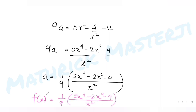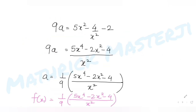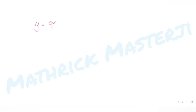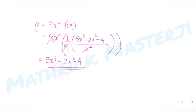Now that we have f(x), we can find y. The question tells us y = 9x²·f(x). Substituting our expression, y = 9x² · (1/9) · (5x⁴ − 2x² − 4)/x. The 9 and the x² cancel with the denominator, leaving y = 5x⁴ − 2x² − 4.